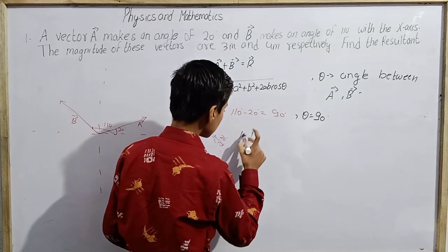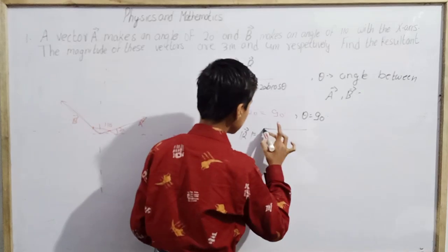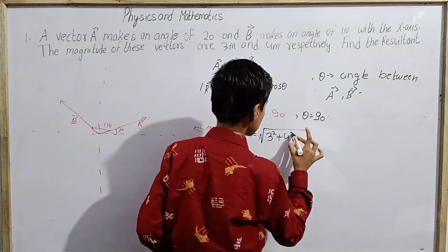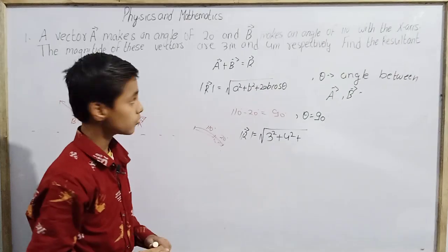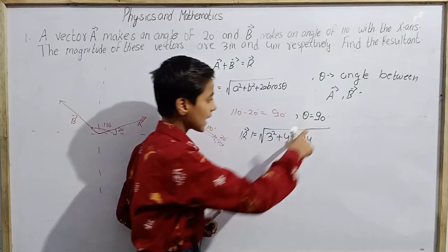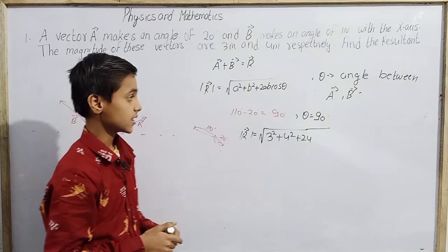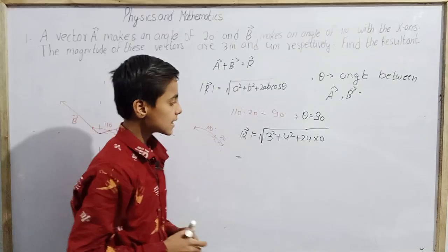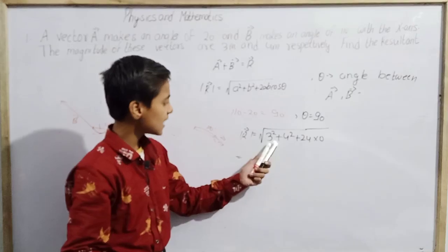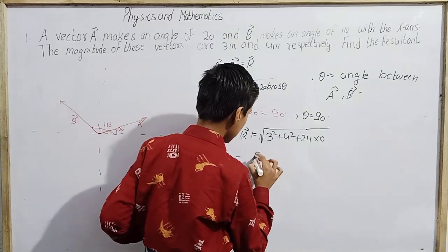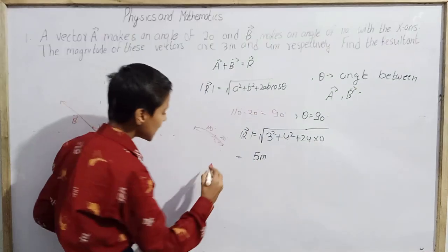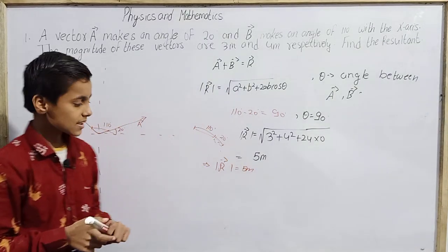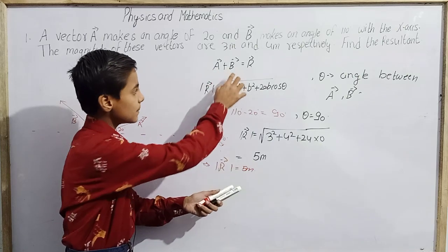Now I will calculate the magnitude of Vector R. It is the square root of 3² + 4² + 2×3×4×cos90°. Since cos90° = 0, the term 2×3×4×0 = 0, so adding zero has no effect. This gives us the square root of 9 + 16 = square root of 25 = 5 meters. So the magnitude of Vector R is 5 meters.